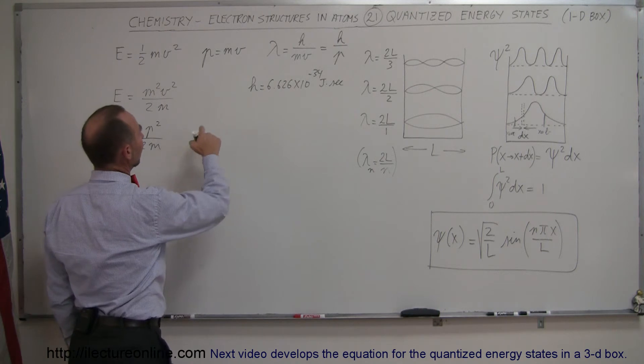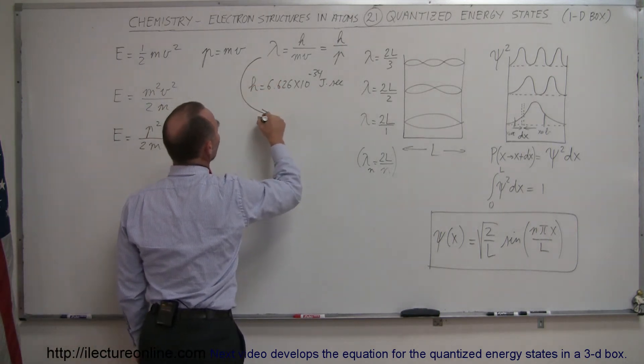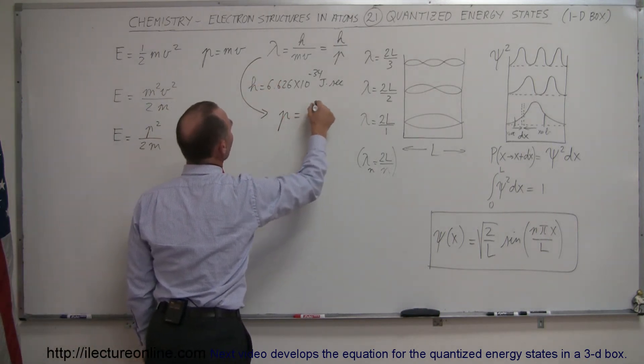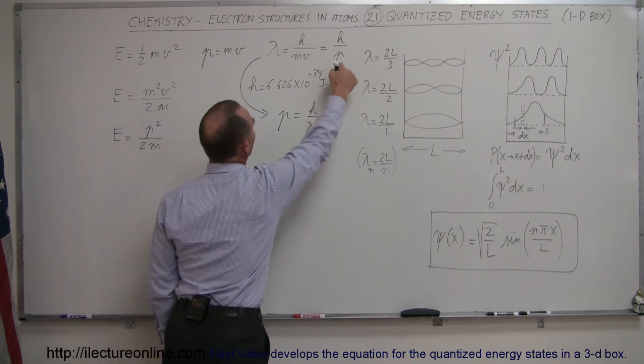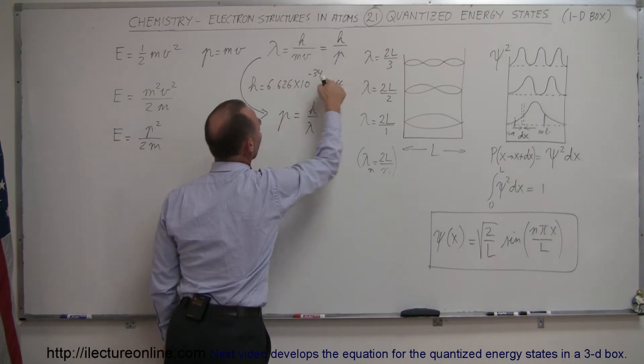And so the next thing I'm going to do is say, okay, let's take this equation and let's write this as p is equal to h divided by lambda. Simply put the p up there and put the lambda down here.